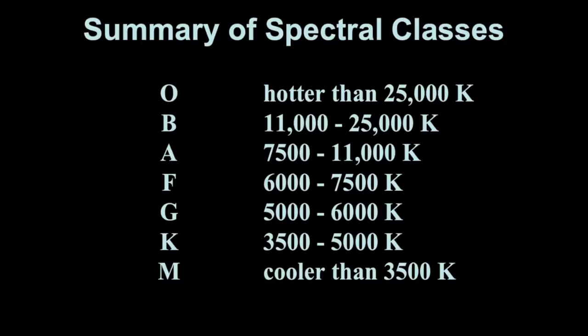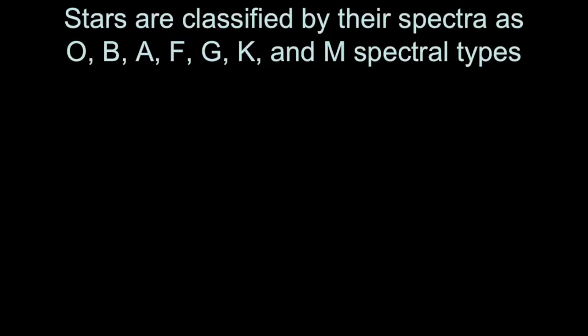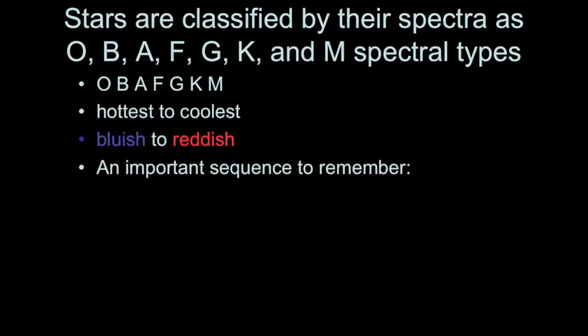So this is the classification scheme, there's seven letters to represent the different spectral types. O-B-A-F-G-K-M. It goes from hottest to coolest, bluish to reddish. And you're going to need to know the order of spectral classes. So it's important to remember.